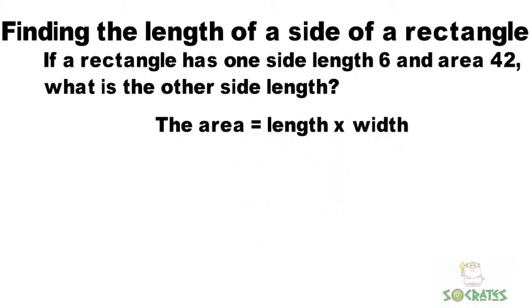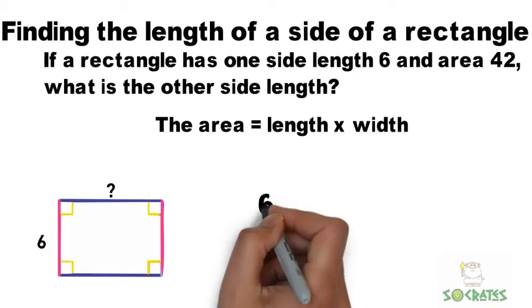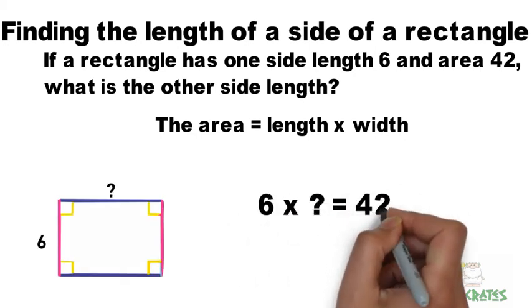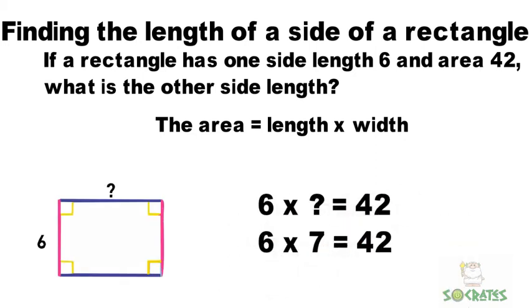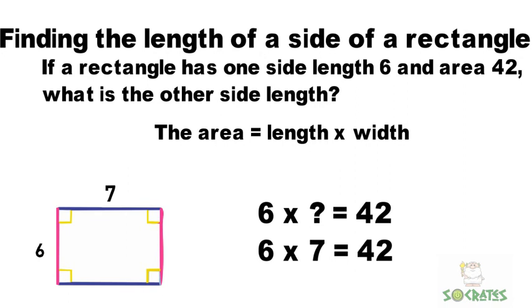We know that area equals length times width. So six times what equals 42? Six times seven equals 42. So we know that our other side is seven.